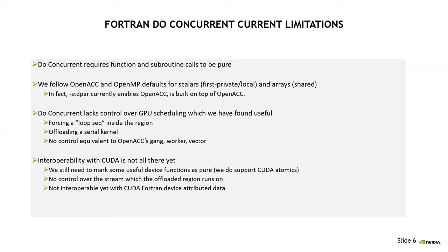We still need to mark some of our standard device functions as pure. There are certain CUDA things you can't call in a do concurrent. We do support atomics because that was important, but there are other low-level CUDA functions that would be nice but we're not there yet. We don't have control over the stream on which the offload region runs, and we are not yet interoperable with CUDA Fortran device-attributed data. We'd like to declare CUDA Fortran device data and use it in a do concurrent — these are extensions, so it would be non-portable, but it would make the programming model much more powerful.